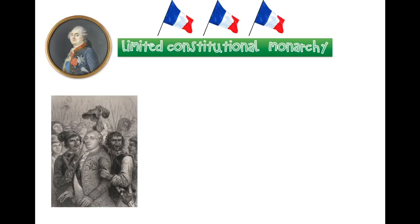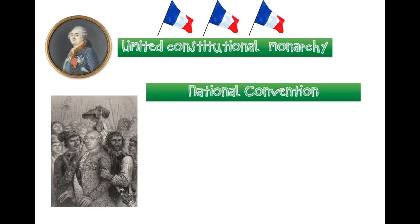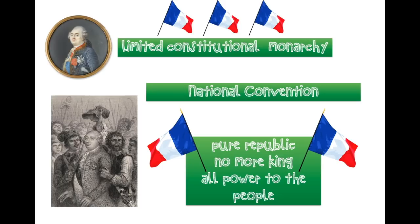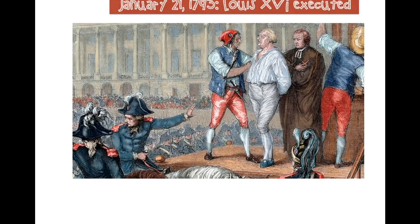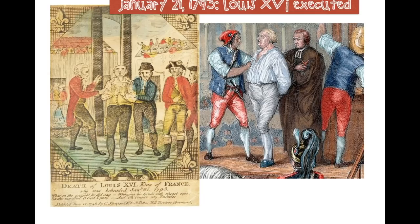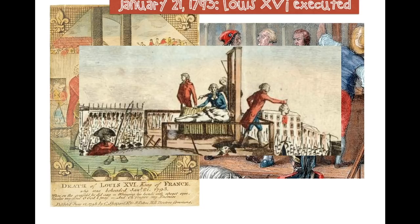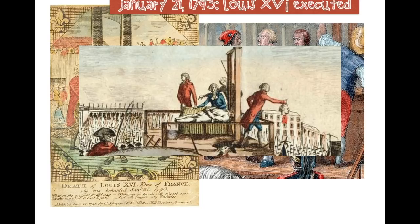Eventually they attack the king and his palace, blaming him for everything. They think he's a traitor selling secrets to the enemy. They arrest the king and put the little Phrygian cap on him. The government transitions one more time — from a limited constitutional monarchy to what's called the National Convention, which is a pure republic with no king. All the power will be in the hands of the people. France goes from a monarchy to a republic. And without a king, they need to get rid of him. On January 21st, 1793, Louis XVI is executed by guillotine — he was put on trial, found guilty, and sentenced to death.